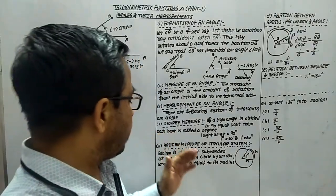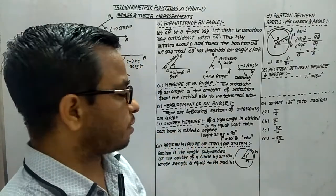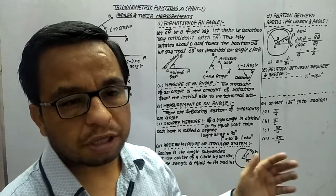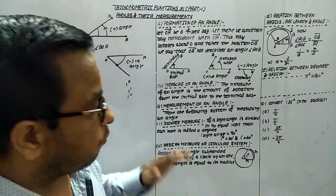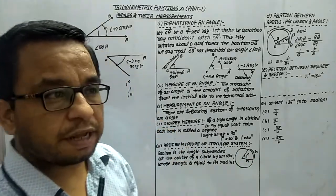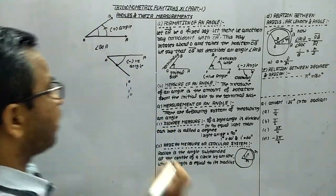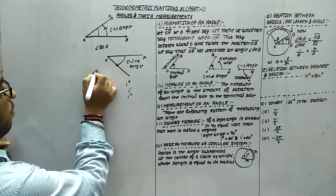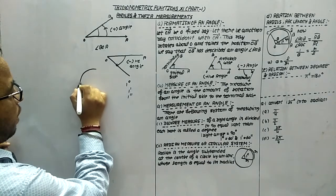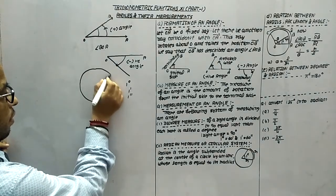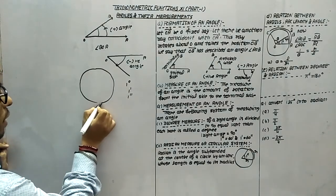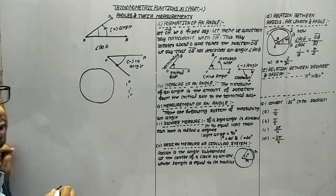Another thing — radian measure, or the circular system. From the name it is clear: if we are taking the measurement in a circle, then it is known as the radian measure.